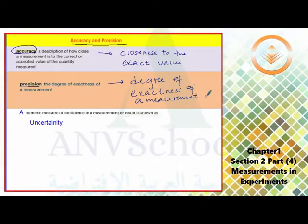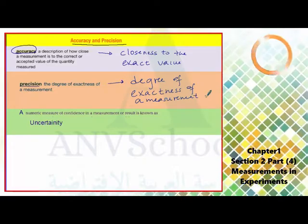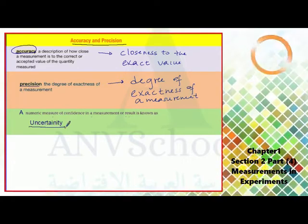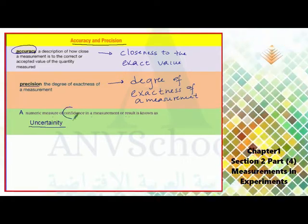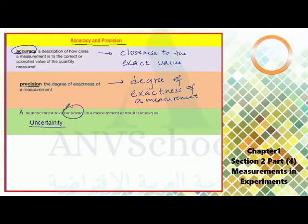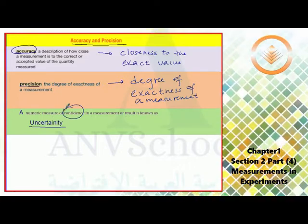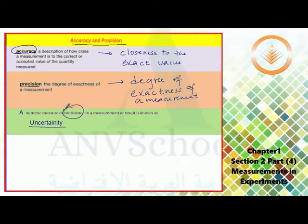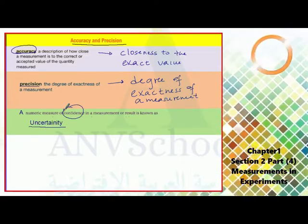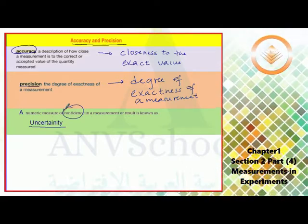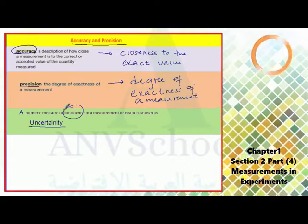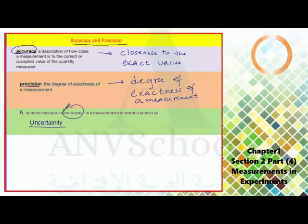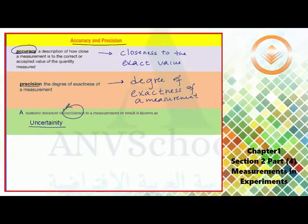A numeric measurement of confidence in a measurement is known as uncertainty. When you say uncertainty, it tells us how confident we are to the exact result. Are you very close to the exact result or far away from the result? When we say we are certain, we mean that we are confident that our measurement is very close to the exact result or far away from the exact result. That's all we have for today.